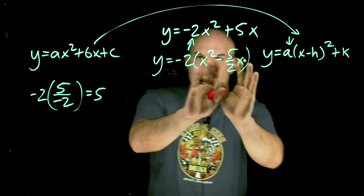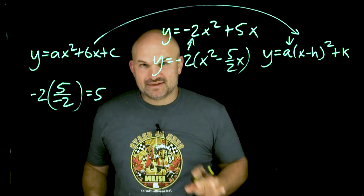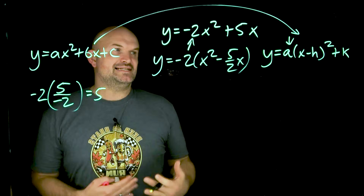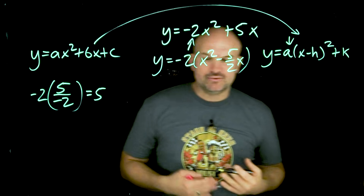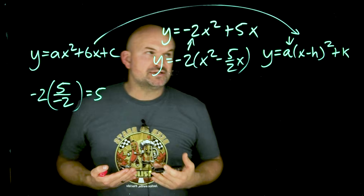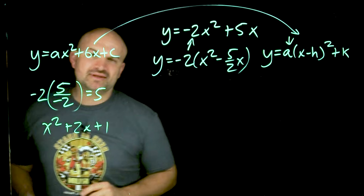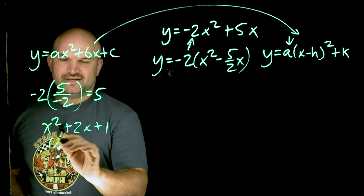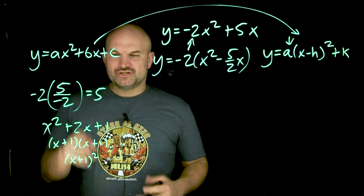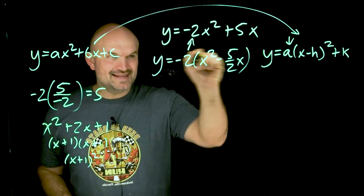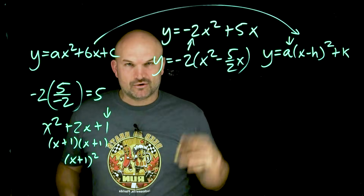Now inside the parentheses we have x squared minus 5 halves x — something we can work with for completing the square. The idea is to go from standard form with x squared to a quantity x minus h, squared. We need to create what we call a perfect square trinomial, because perfect square trinomials can be factored into a binomial squared. For example, x squared plus 2x plus 1 is a perfect square trinomial that factors to the quantity x plus 1, squared. Our middle term is negative 5 halves, so it's a bit more involved to find the value c that creates our perfect square trinomial.